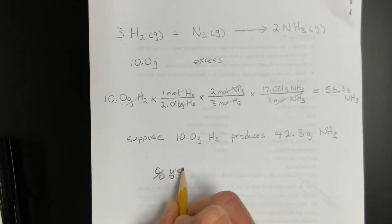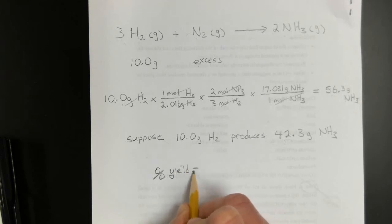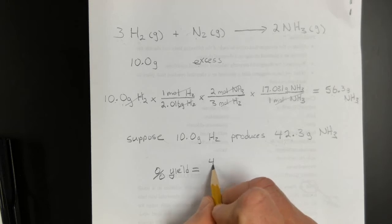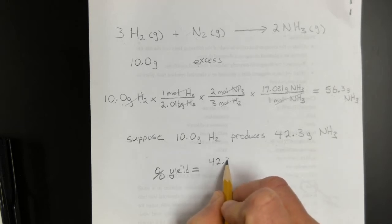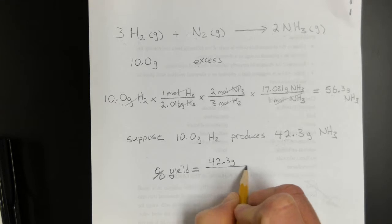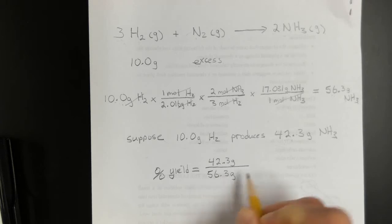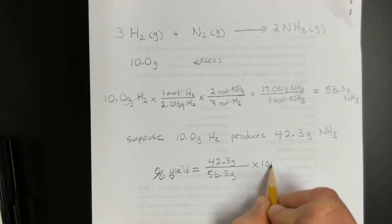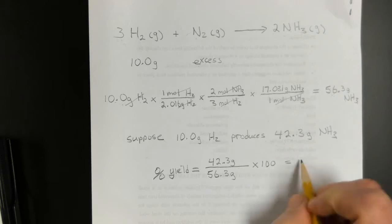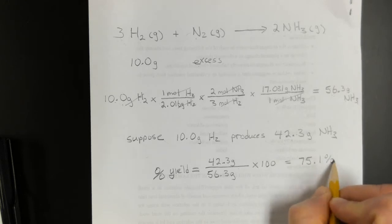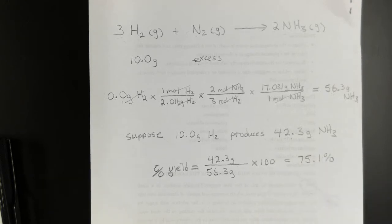The percent yield calculation is simply actual yield over theoretical yield, multiplied by 100 for a percent. Our actual yield is 42.3 grams divided by the theoretical yield of 56.3 grams, multiplied by 100, which gives 75.1% yield.